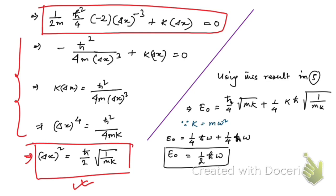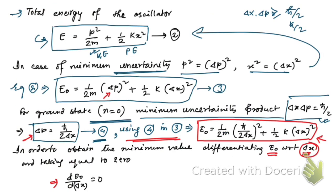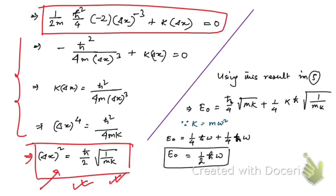Using the value of Δx² obtained from minimization and substituting back, with k = mω², the result simplifies to E₀ = ½ℏω, which confirms the zero point energy. This completes the answer to question 2c. The remaining questions will be solved in the next video. Thank you for watching — see you in the next video!